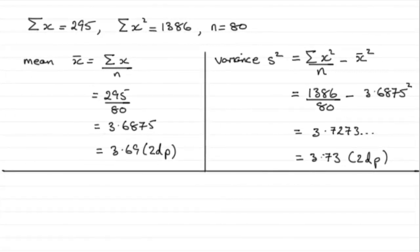Now for part D, we've got to explain how the answers from part C up here support the choice of a Poisson distribution as a model.